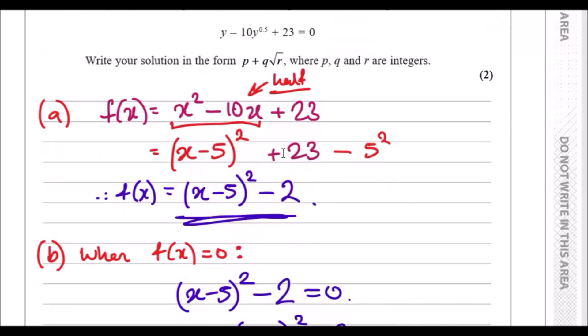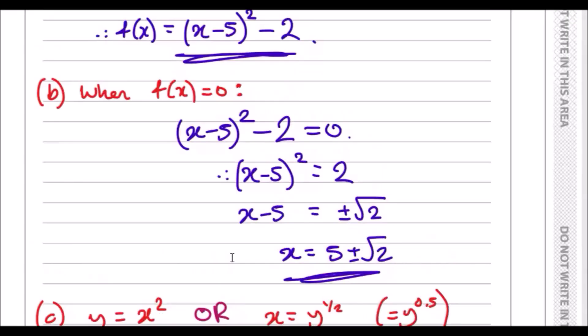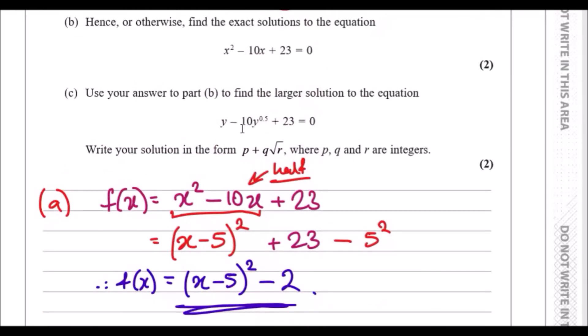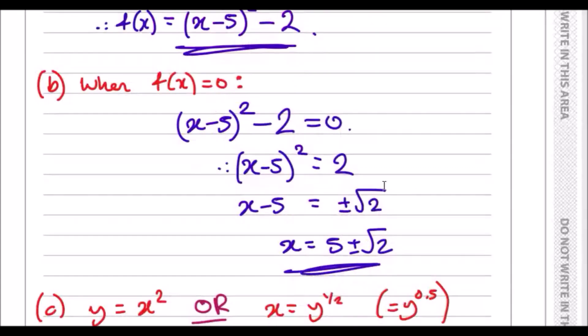So essentially you could say okay, y is clearly x squared. So what I did, I just let y equal x squared, or you can say x equals y to power half. All they want you to do is repeat this but this time find the solution to the larger part.